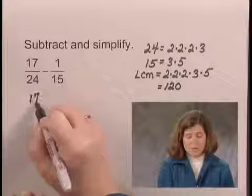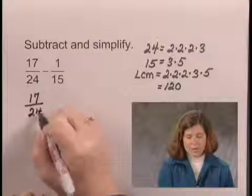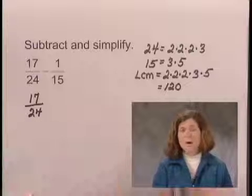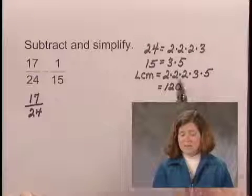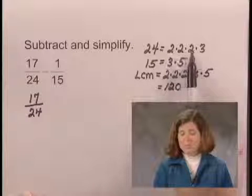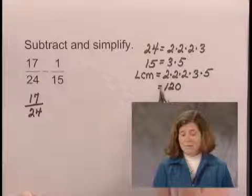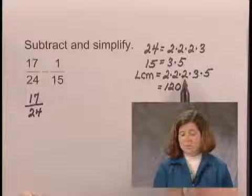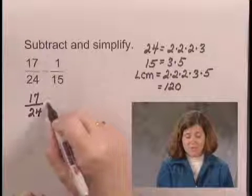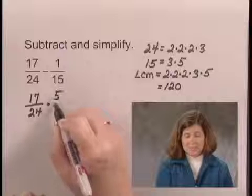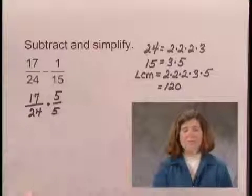To do that, we need to multiply by 1, and we think 24 times what is 120? Well, an easy way to see that is to look at 24 as 2 times 2 times 2 times 3, and the least common multiple is 2 times 2 times 2 times 3 times 5, so we need a factor of 5. So we multiply 17 24ths by 5 fifths.